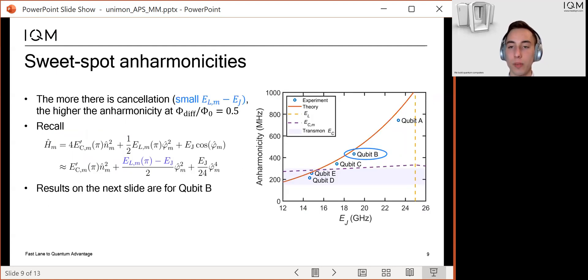Here I now show you some experimentally measured anharmonicities for five Unimons as a function of the measured Josephson energy. Note that the coplanar waveguide structure was equal for all of the qubits, but the Josephson energies are different. First of all, we see that the measured anharmonicities agree well with the theoretical model that I am illustrating with the orange line.